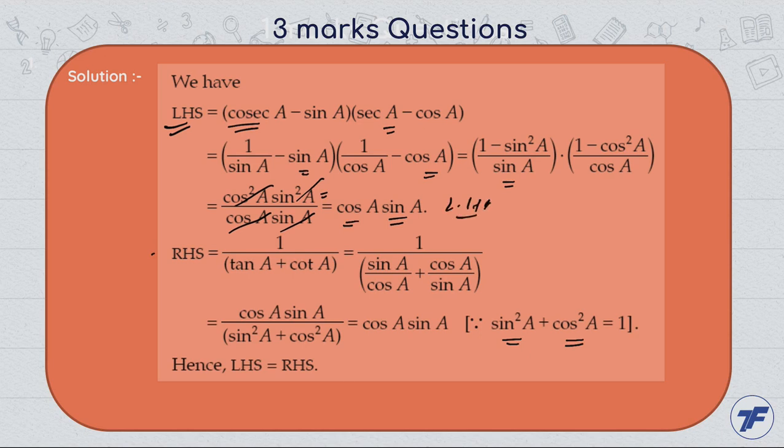Again taking RHS: one by tan A plus cot A. Put the value of tan A in the form of sin and cos. Taking LCM, the denominator gives us the identity form and the numerator gives us cos A into sin A, which is also the LHS. So LHS equals RHS.